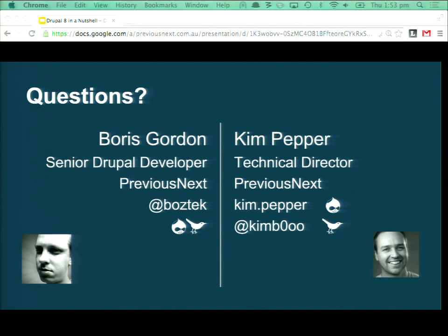Audience question: you mentioned theme() was deprecated, but in the render array you still have a 'theme' parameter — so you're still defining theme_item_list or theme_whatever? How do you create theme templates? It's templates only now. You would still do it the way you do in Drupal 7 — you've got your theme registry where you define what your theme hooks are, specify what template each theme hook uses and what variables it takes. The difference is you used to be able to write a PHP function as the theming function — you can't do that anymore. You need to have a template file, and those template files go in your module.